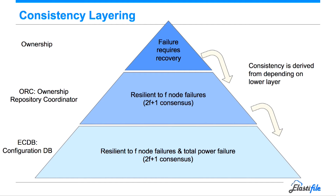This is the trade-off: what is the cost of a failure compared to the common path? For the common path, you want everything as efficient as possible. However, when you have a failure, you want to be able to handle it correctly. This is how we split the different responsibilities.